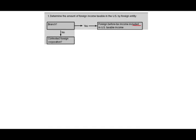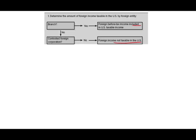If we are operating not as a branch — meaning as a subsidiary — then we have to ask ourselves: is that subsidiary a controlled foreign corporation? If the answer is no, meaning the US shareholders don't own more than 50% — and remember, we only count US shareholders that have 10% or more — then it's not taxable in the US. It's not a controlled foreign corporation; therefore it has nothing to do with the US and the taxable income is not included.